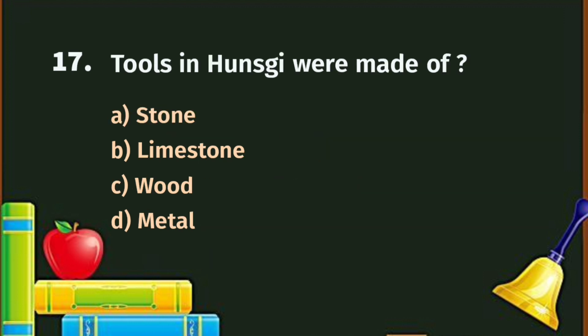Question number 17. Tools in Hunkski were made of what? Hunkski is a place in Karnataka. A. Stone, B. Limestone, C. Wood, D. Metal. The correct answer is B - Limestone.